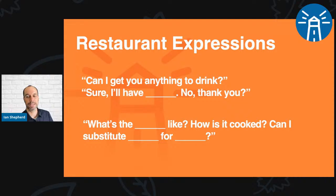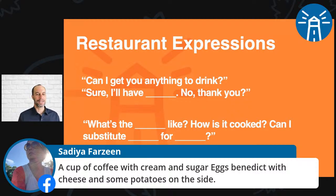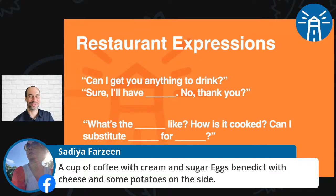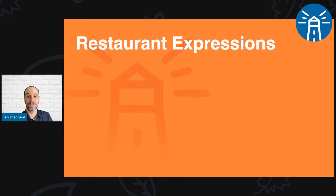Sadia has a great practice order: a cup of coffee with cream and sugar, eggs benedict with cheese, and some potatoes on the side. That is a perfect example of how to order breakfast. So when the server asks what you'd like, state your items clearly and add 'please' at the end. That's an excellent order!